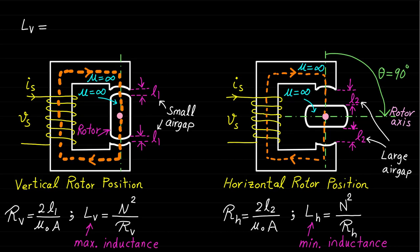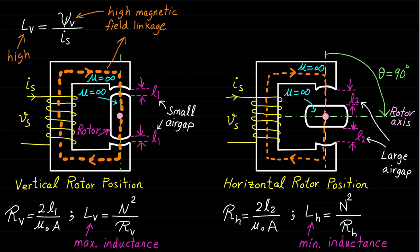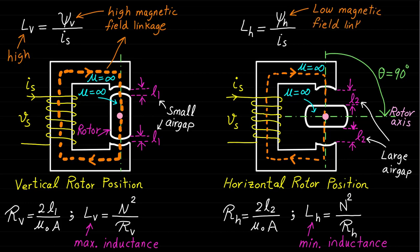For the same excitation current Is, the vertical rotor position will have a high magnetic field level because the inductance value is high, while the horizontal rotor position will have a low magnetic field level because the inductance value is low.